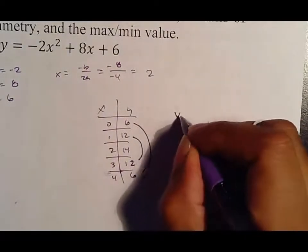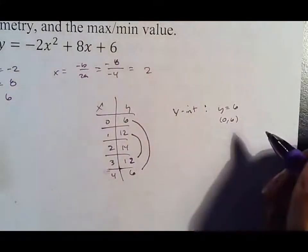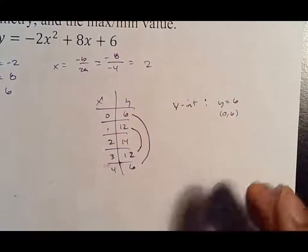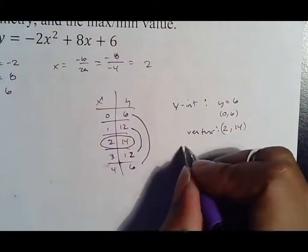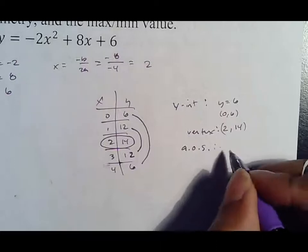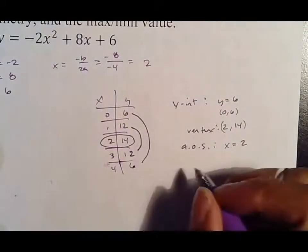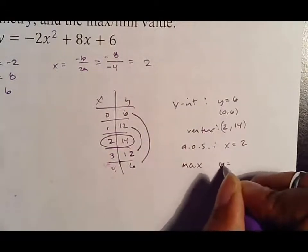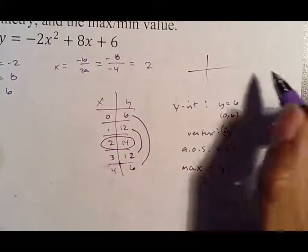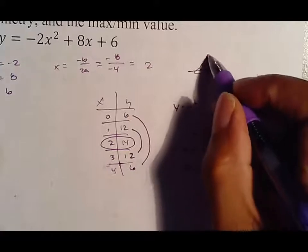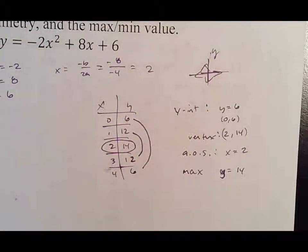Now we look for all the other stuff. Y-intercept means ignore X — take those terms away, and we are left with either y equals 6 or (0, 6). They want the vertex — remember, your vertex is the middle point, which is (2, 14). They want the axis of symmetry, which would be the x, meaning x equals 2. They want the maximum or minimum value. Looking at the values: 6, 12, 14 — 14 seems to be the high point, so it is a maximum of y equals 14, because your maximum or minimum is always a y value.